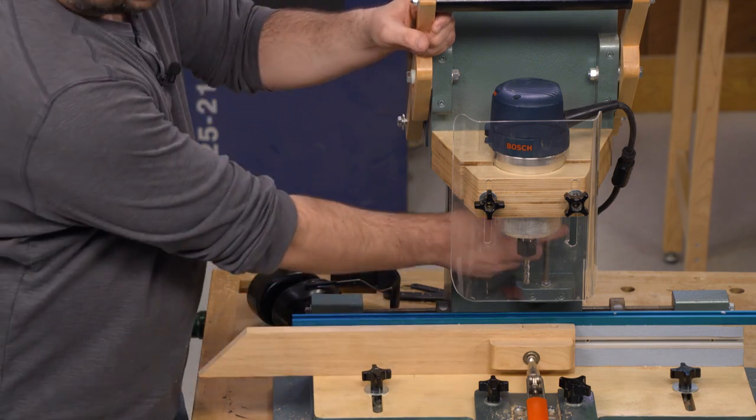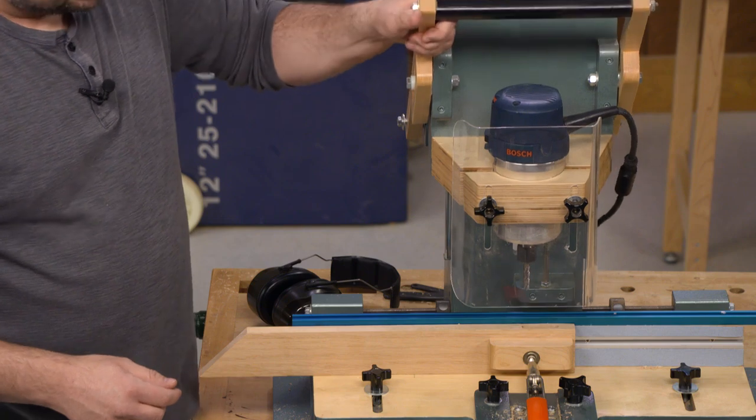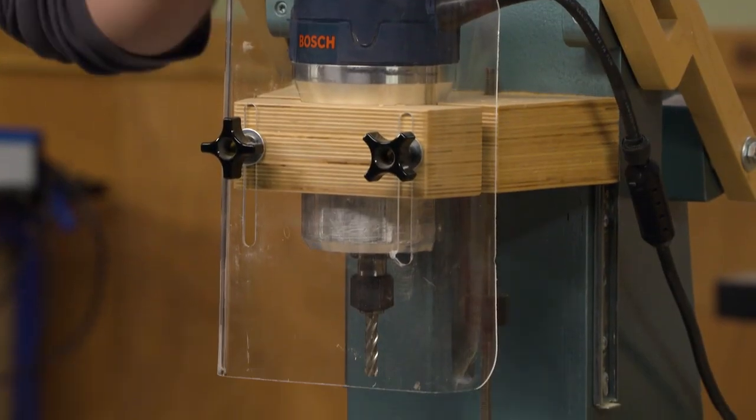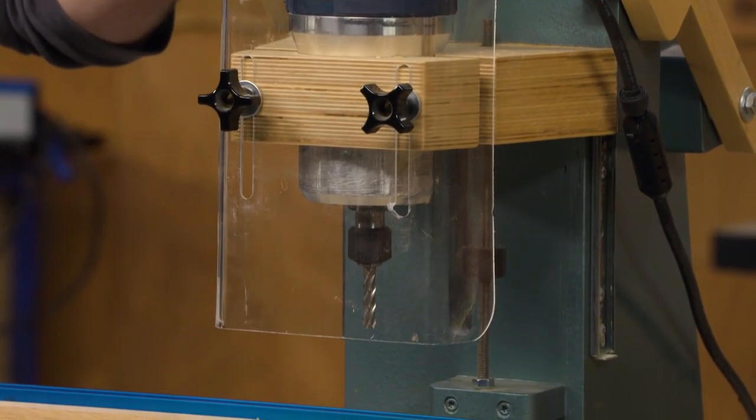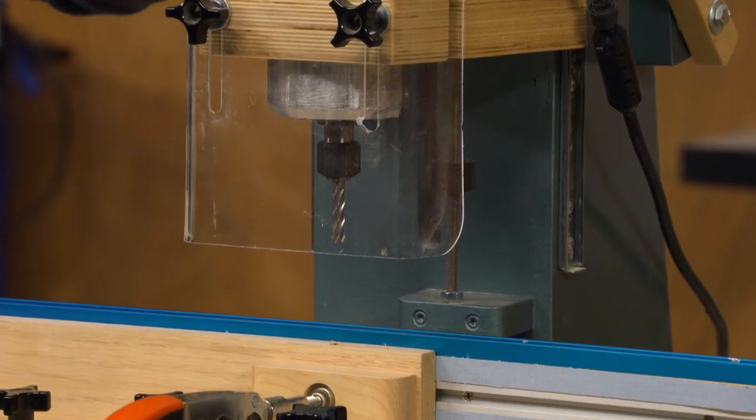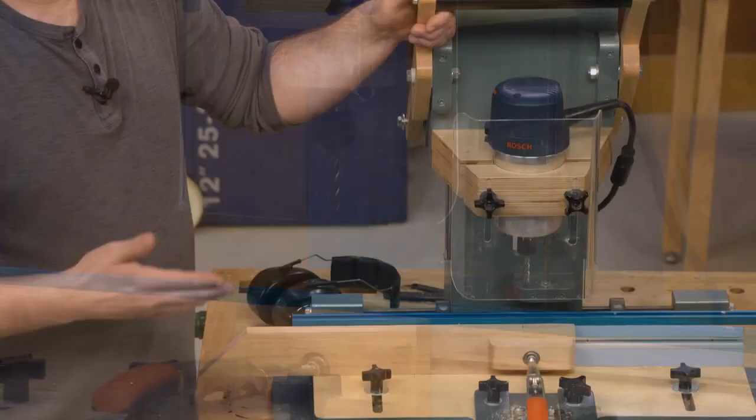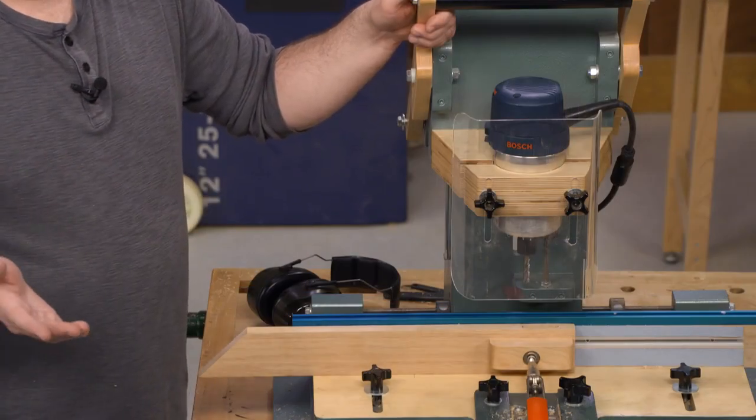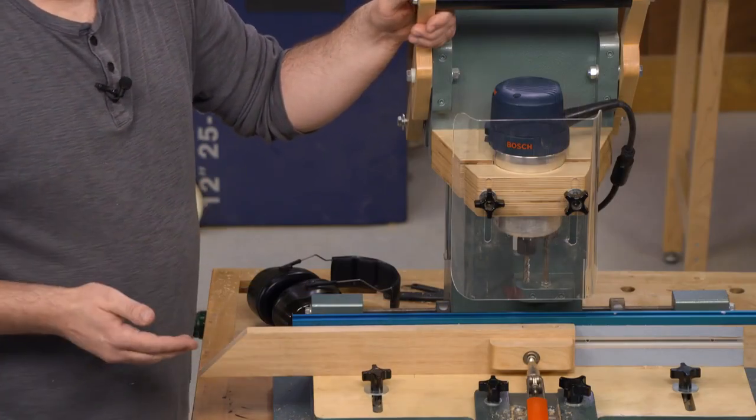One time I went to reach in to adjust the depth stop on this and caught my finger just on the tip of that milling bit and it cut me pretty good. So I think adding a plastic guard is a great idea, and even though you may not use plastic a lot as a woodworker, they're really easy to make.